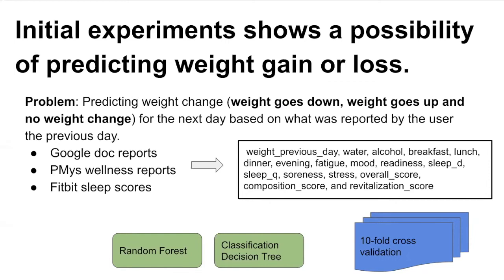For this experiment, we considered features from all three different data sources: Google Forms reports, PMC's app reports, and Fitbit sleep scores. For example, we used features such as previous weight, water, alcohol, breakfast, lunch, dinner, evening, mood, etc. We mainly selected random forest and classification decision tree algorithms. Ten-fold cross-validation techniques were used for these machine learning methods.